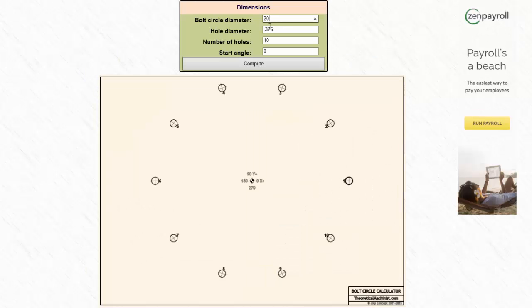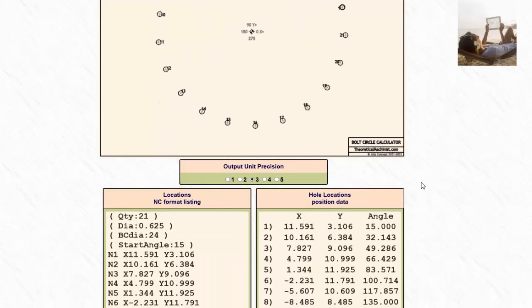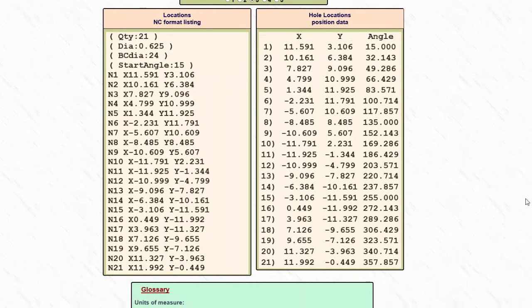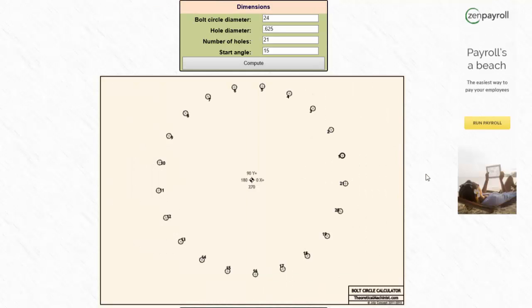Let's do one more. We'll make it a 24 inch diameter with 0.625 diameter holes. We're going to put 21 holes starting at 15 degrees. I'm going to say compute. There are all the holes. And we scroll down below. You just can't do it any faster than that. A very simple and very powerful tool saving you a lot of time. So that covers bolt hole circles.